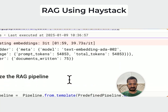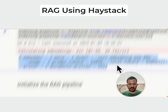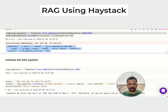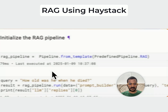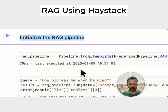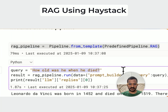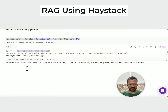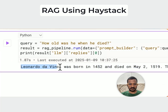You should see the output showing prompt tokens, total tokens, and the text embedding model used. At the end, we initialize the RAG pipeline with a simple query. This is the RAG pipeline, and the query is: 'How old was he when he died?' — we are talking about DaVinci. Once you run this, we will get an answer response back.